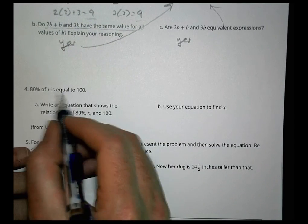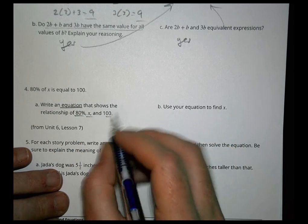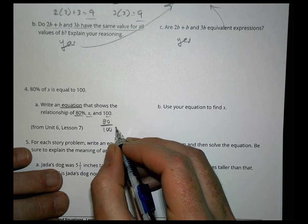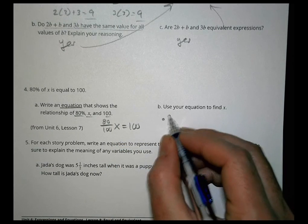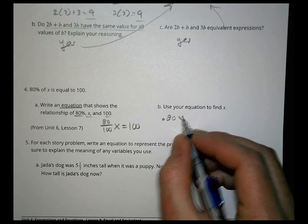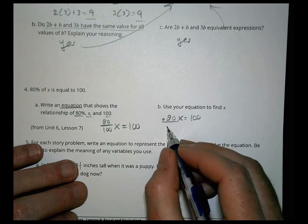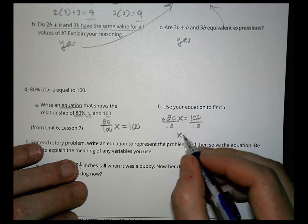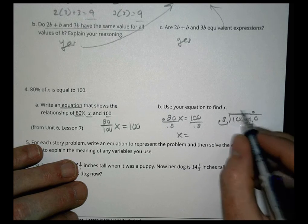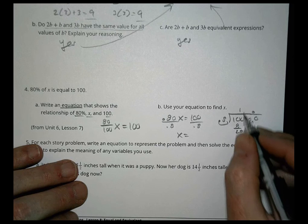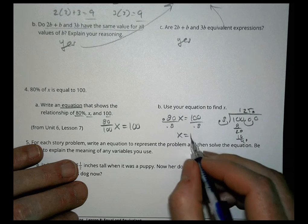Number 4: 80% of x equals 100. Write an equation showing the relation between 80% of x and 100. We could write it as 80 over 100 times x equals 100, or as 0.8x equals 100. Then we divide both sides by 0.8. Moving the decimal: 0.8 goes into 100.00 — x equals 125.